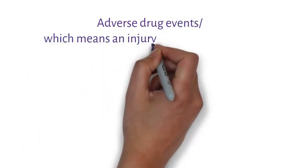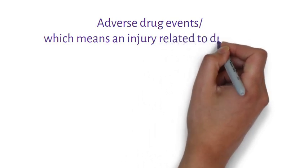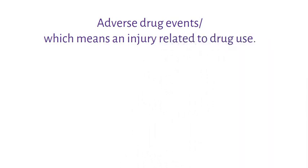There are different kinds of medication related errors. These include adverse drug events, which means an injury related to drug use. For example, some drugs used for migraine may have unwanted cardiac arrhythmia effects. If this is an unusual finding and there is no other reason for the event, it should be reported in the literature.